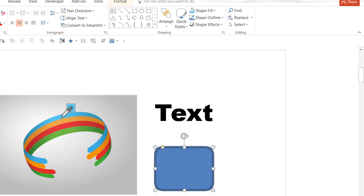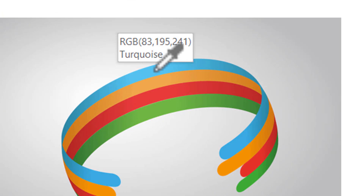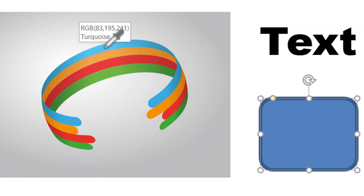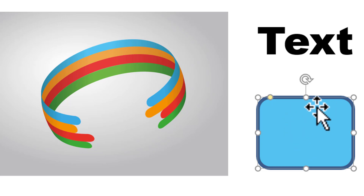Now I move my cursor onto the specific color that I want to pick up, and you can see that my cursor gives me some important information like what is the color that I am choosing and what are the RGB values of the color that I have picked up. And as soon as I click on that specific color, you can see that the shape I had initially chosen is now filled with that specific color.